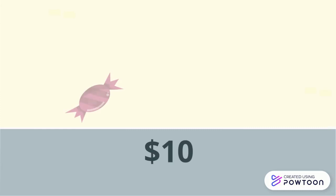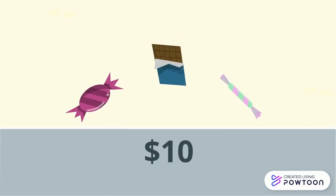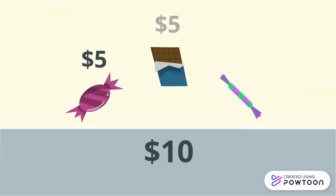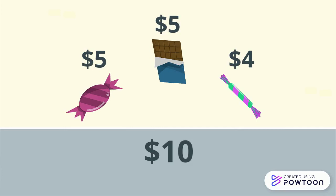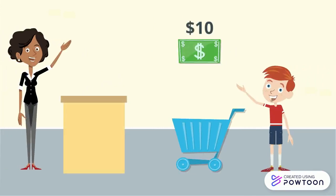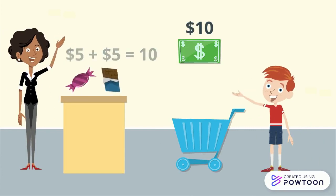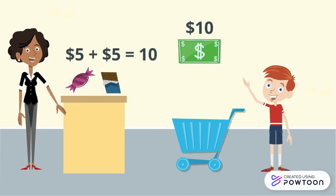$10 is the most that you are able to spend. From everything that you picked out, one candy costs $5, another candy costs $5, and the last candy costs $4. To not go above $10, you can only buy two of the candies. Then you go back to the cashier, but this time with two candies that cost $5 each.